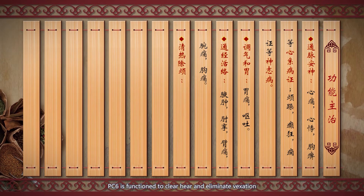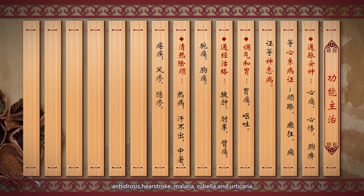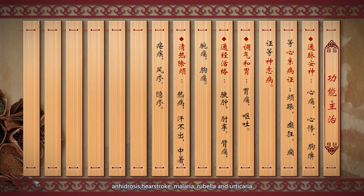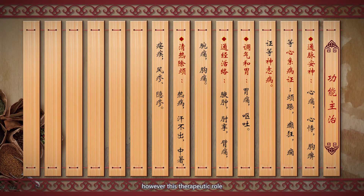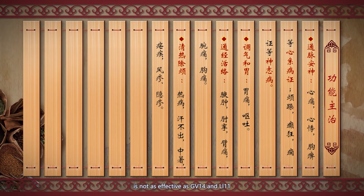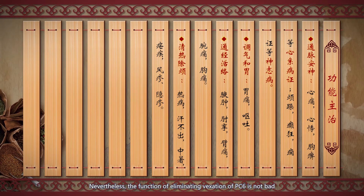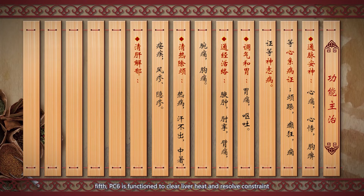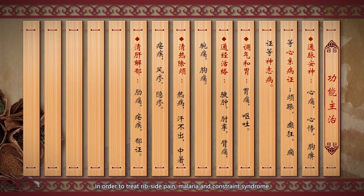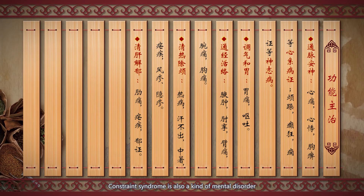Fourth, PC6 functions to clear heat and eliminate vexation, treating febrile disease, anergeia, heat stroke, malaria, rubella, and urticaria. However, it is not as effective as GV14 and LI11 in clearing heat, though its function of eliminating vexation is notable. Fifth, PC6 functions to clear liver heat and resolve constraint, treating rib side pain, malaria, and constraint syndrome. PC6 is commonly used to treat mental disorders in clinics, and constraint syndrome is also a kind of mental disorder.